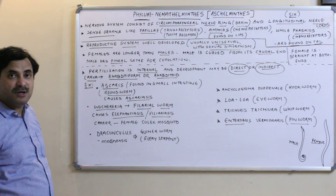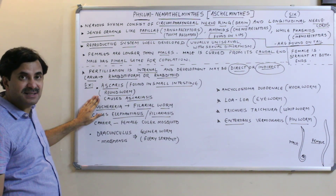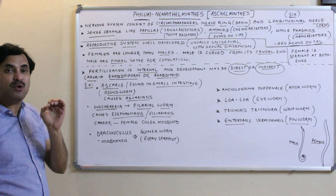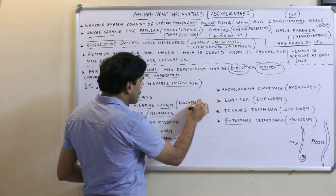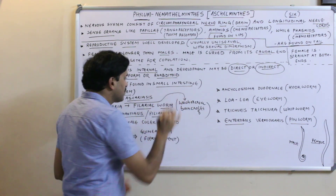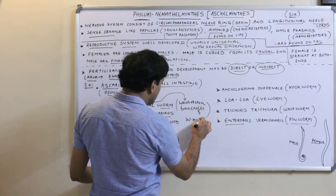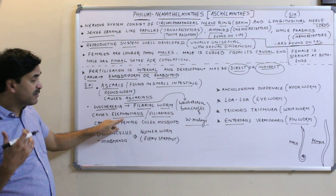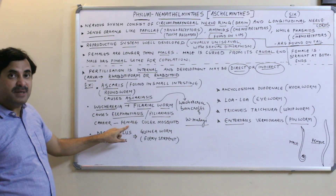Examples of this phylum: Ascaris, found in the small intestine, causes ascariasis. Wuchereria bancrofti (and Wuchereria malayi) is called the filarial worm and causes elephantiasis, also called filariasis; the carrier is the female Culex mosquito.